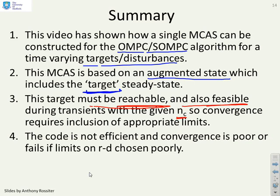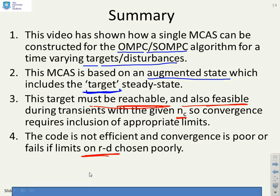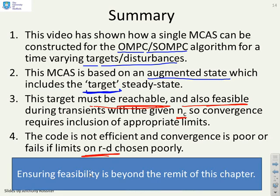The code is not efficient and convergence is poor, and indeed it can fail altogether if R minus D is chosen poorly. Now ensuring feasibility is beyond the remit of this chapter. But what we're going to do in the next video is we're going to look at how you can make the code more efficient so that it now becomes something you really can work with.